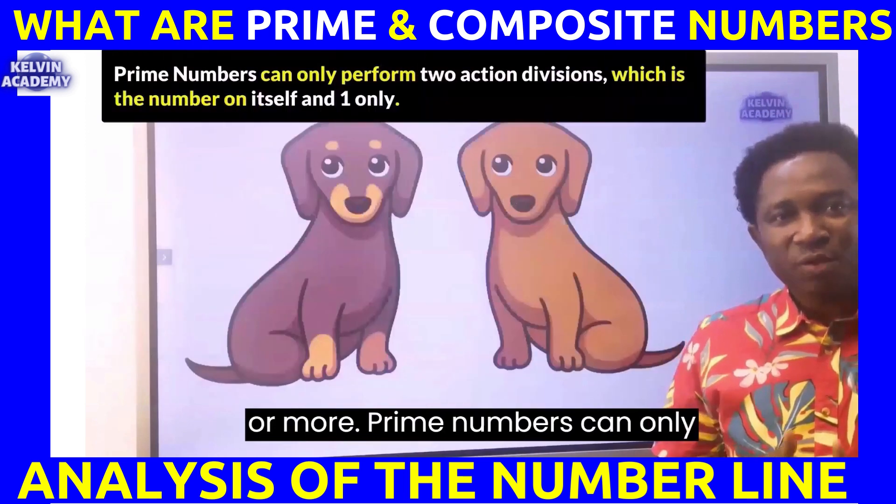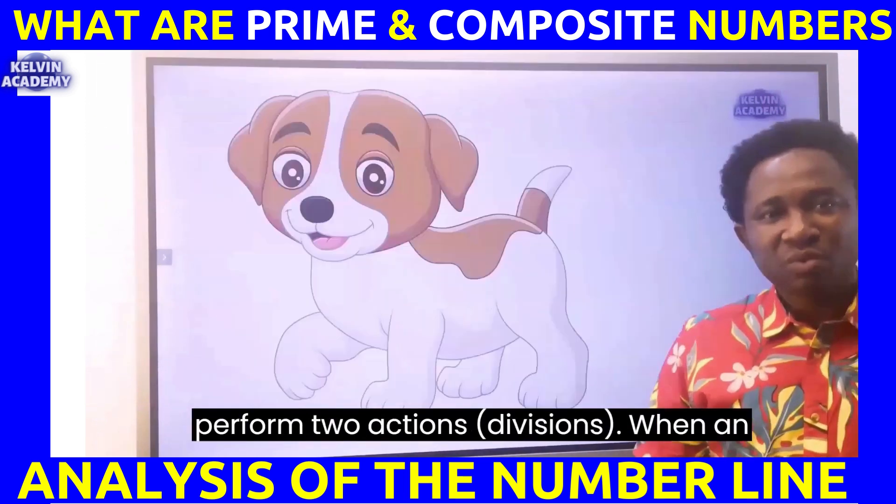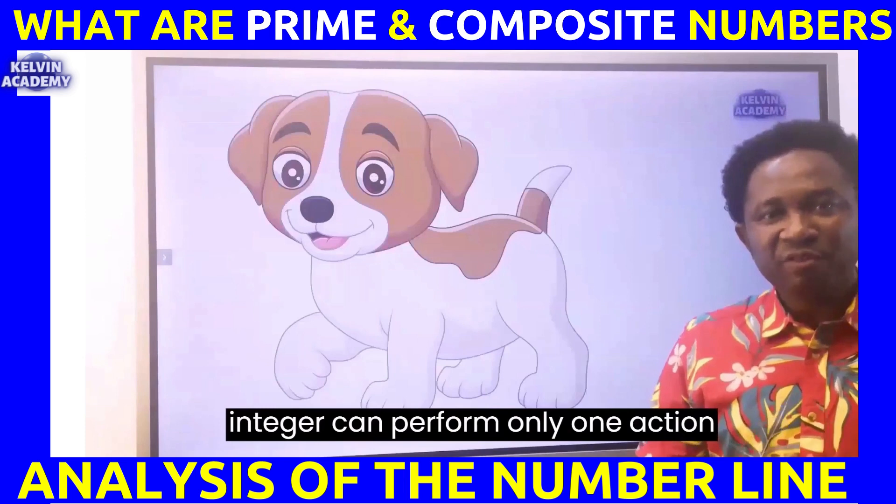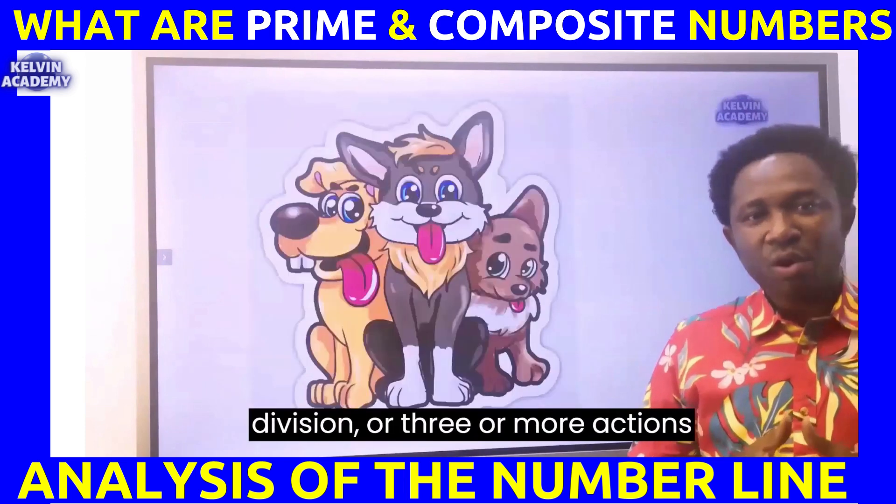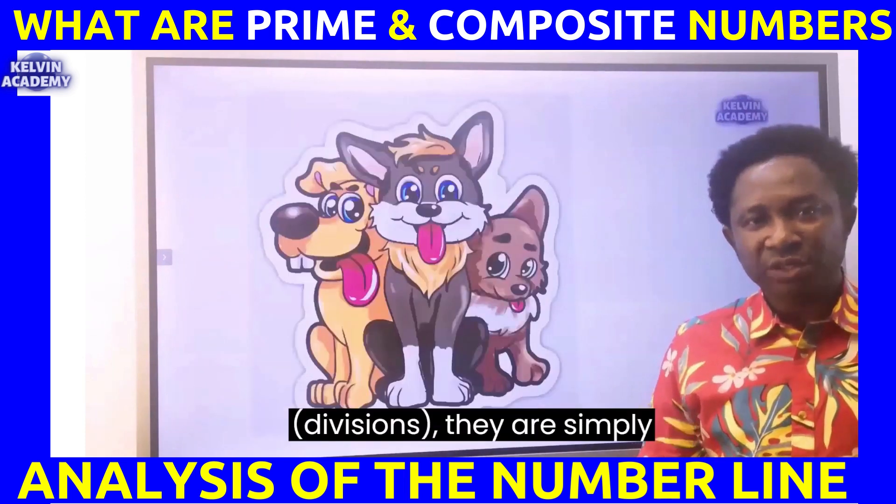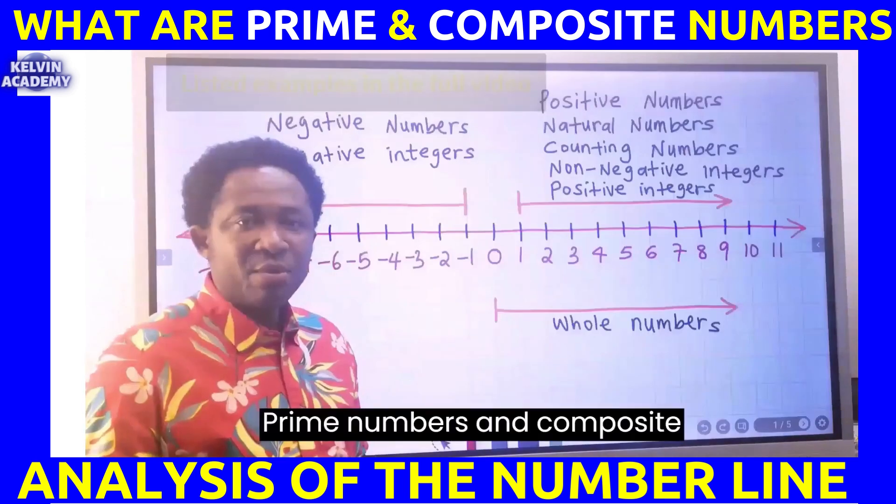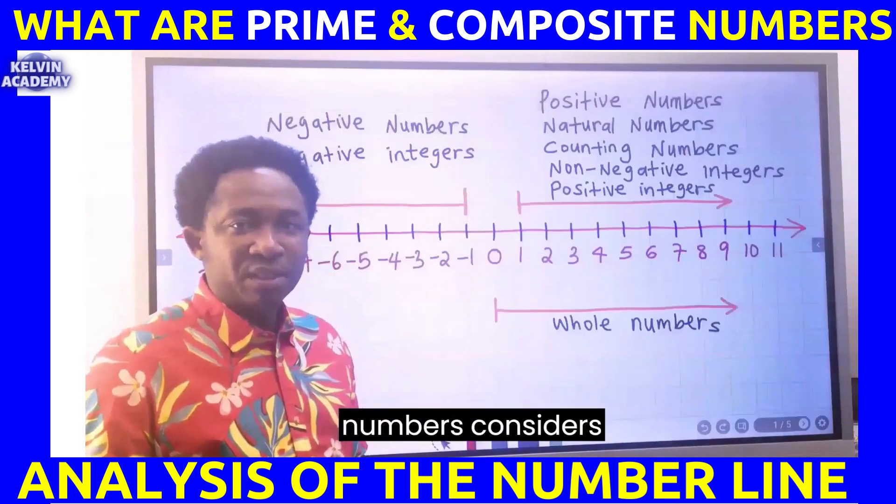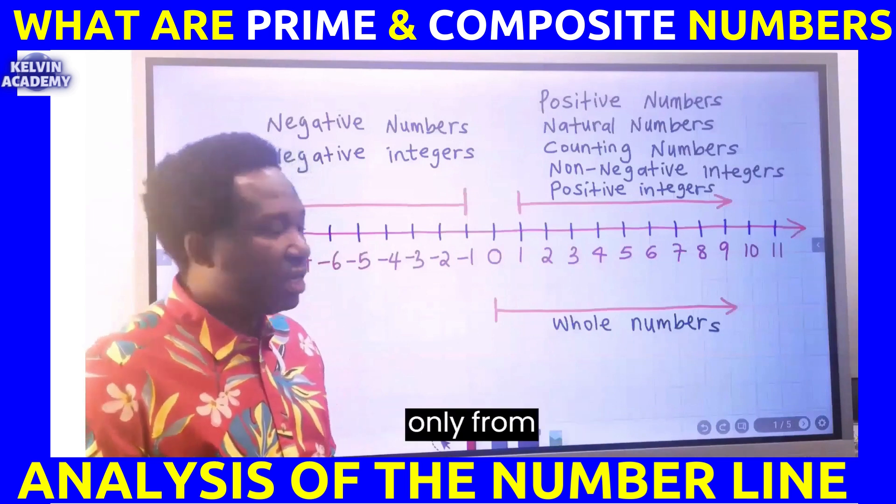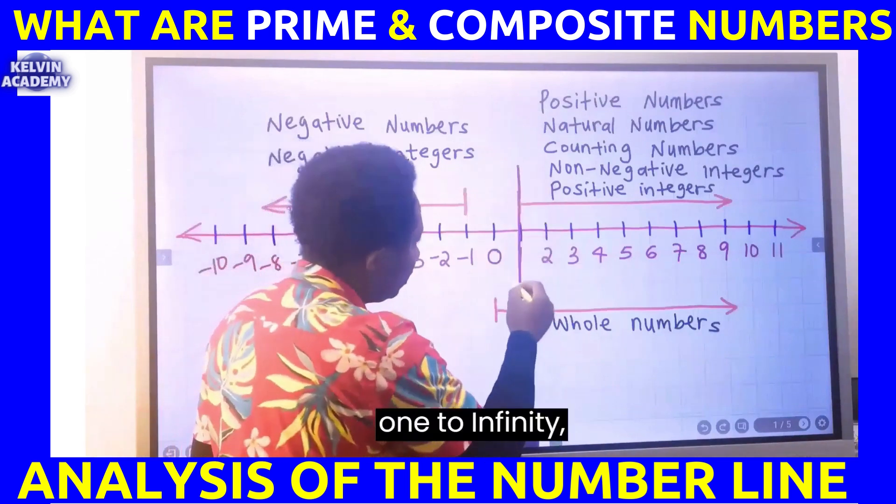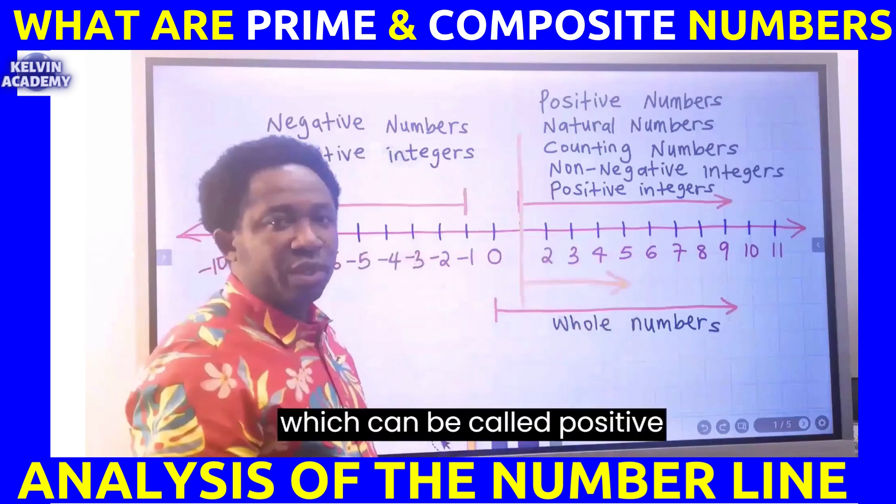When an integer can perform only one action or three or more actions, they are simply called composite numbers. Prime numbers and composite numbers consider only from one to infinity, which can